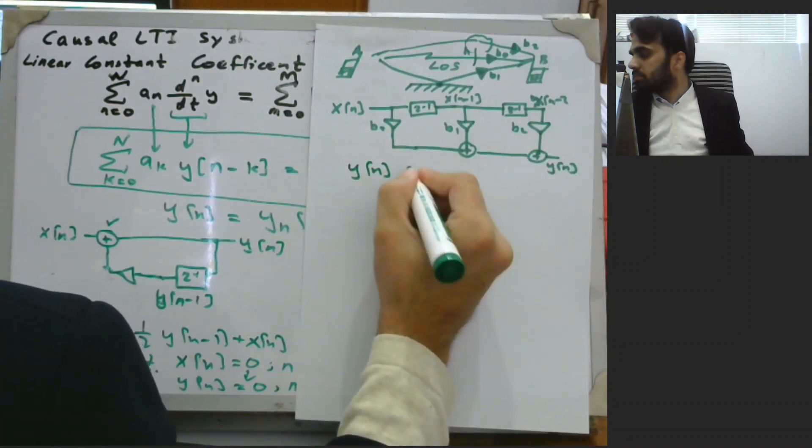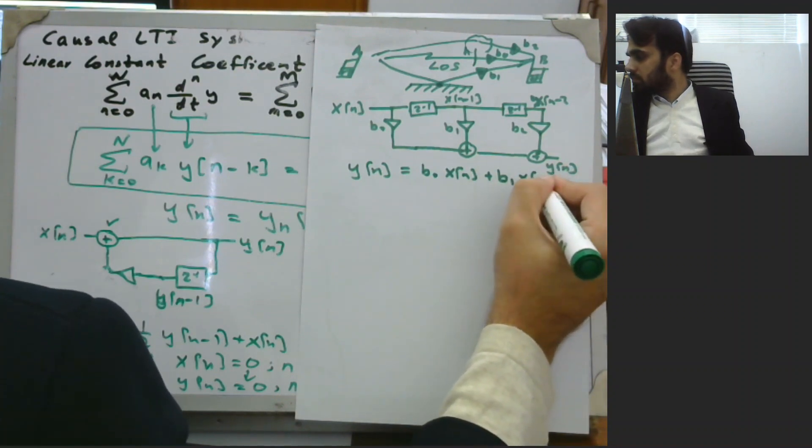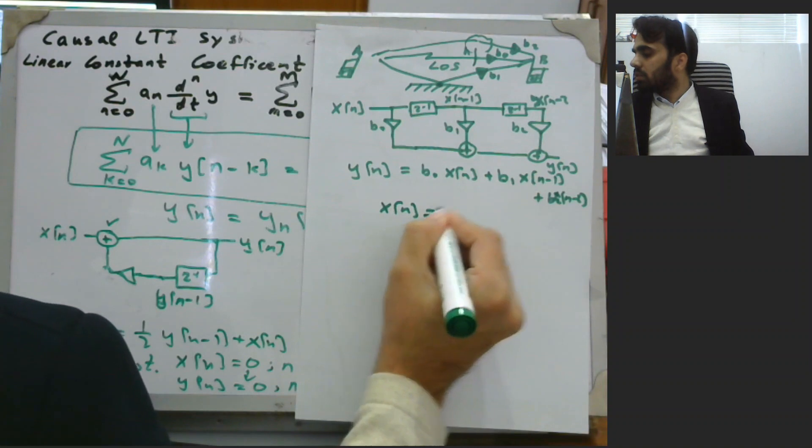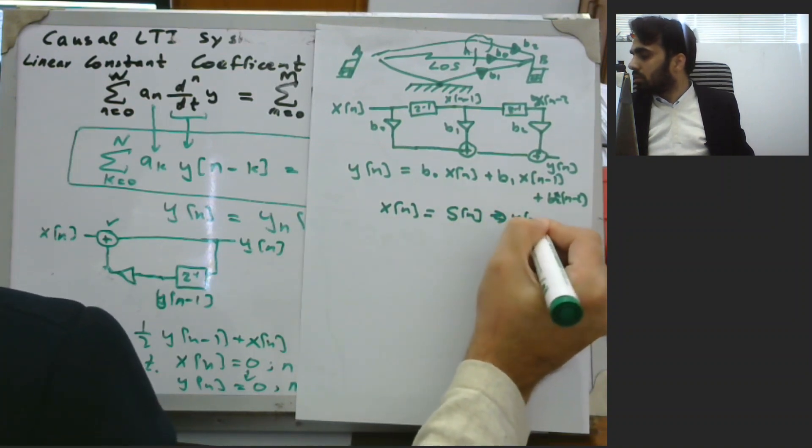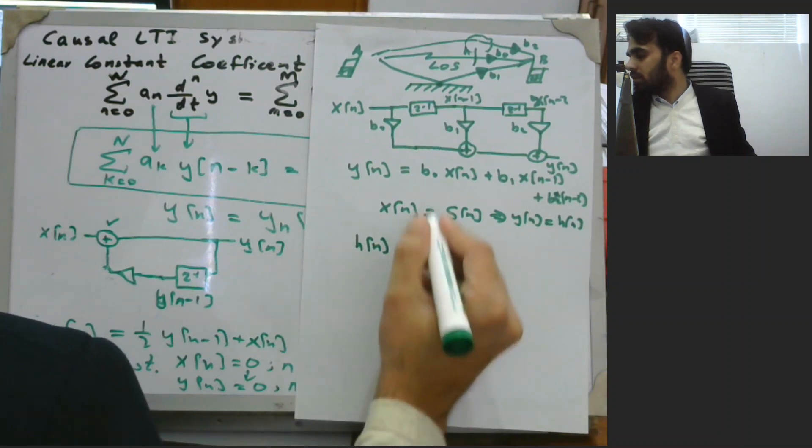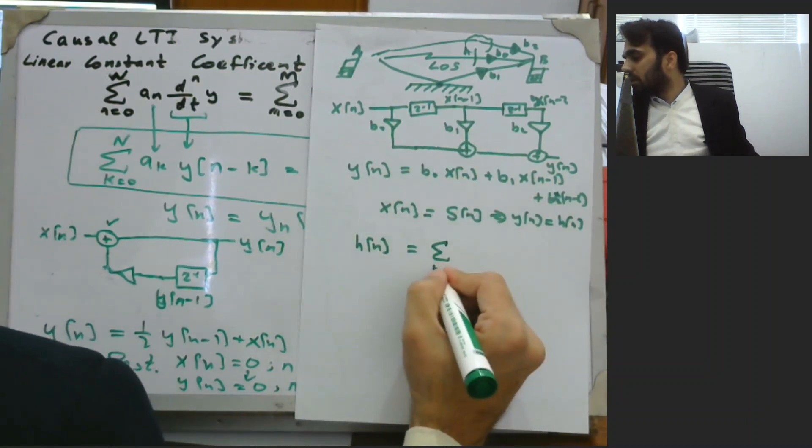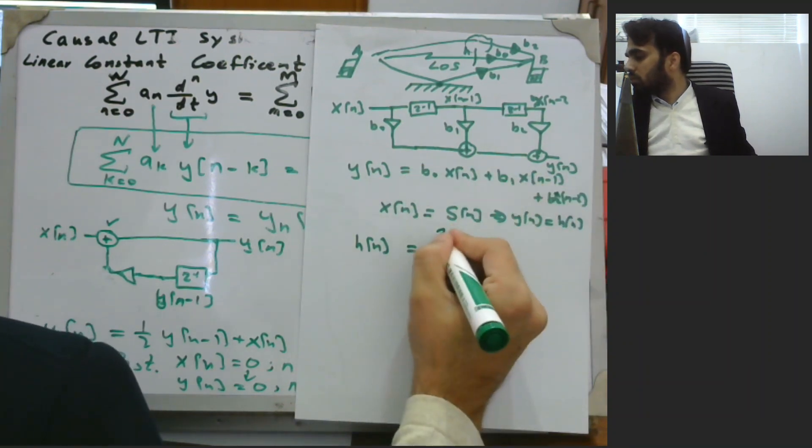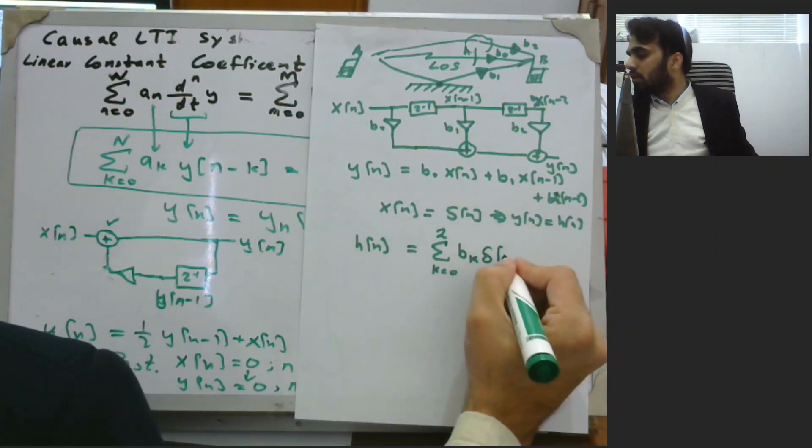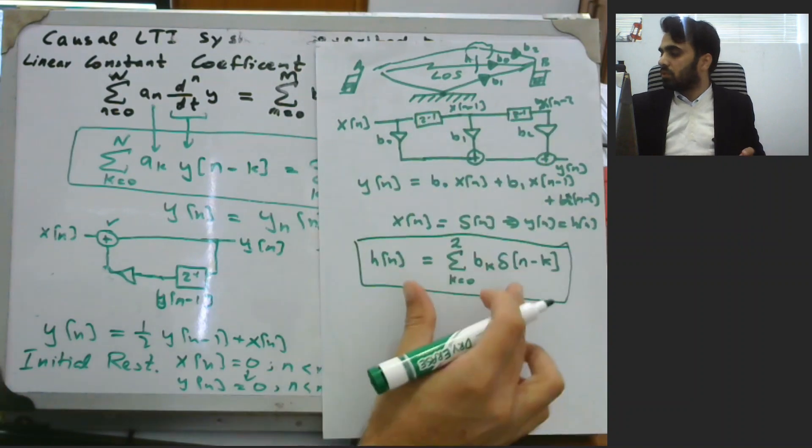The difference equation for this is simply y of n equals the sum of b_k times x of n minus k. If the input is delta of n, the output simply converts to the impulse response h of n. We can write these three terms of summation as the sum for k equal to 0 to 2 of b_k times delta of n minus k. So for this particular system, this is the impulse response.